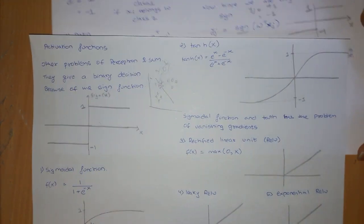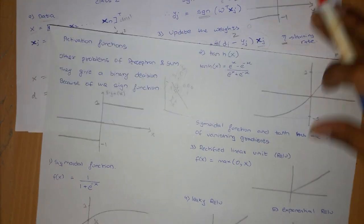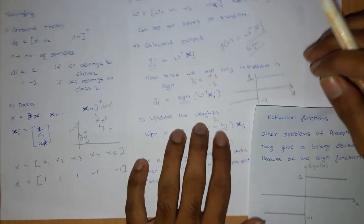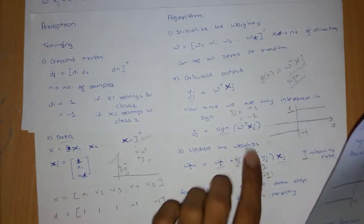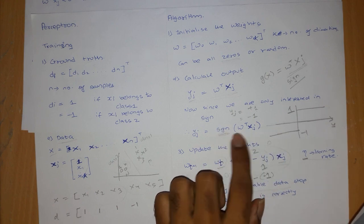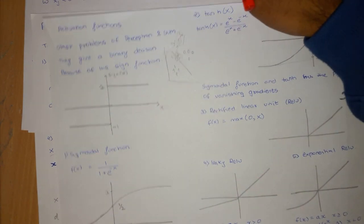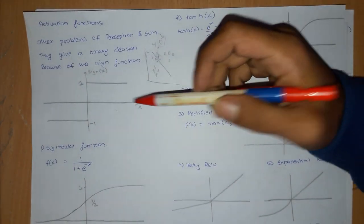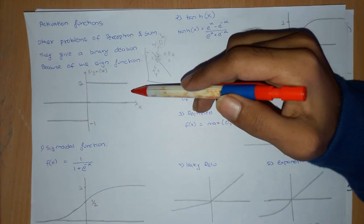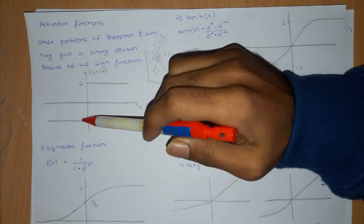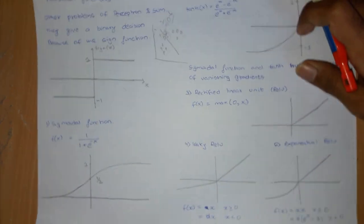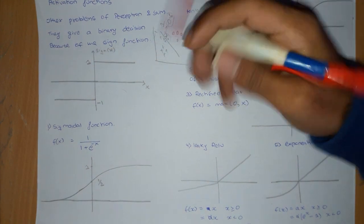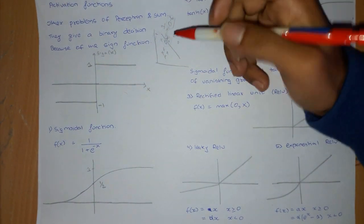This binary output is because of the sign function, which we have seen in the perceptron rule. The sign function is also used in SVM — if the output is positive you assign it to one class, and if it is negative you assign it to the other class. So let us see what else we can use instead of this.